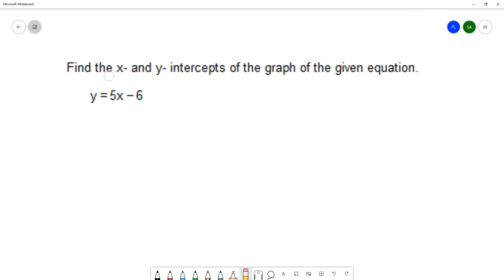For this question, we want to find the x and y intercepts of the graph of this given equation. Our equation is y equals 5x minus 6. Let's start by finding the y intercepts because they're a little bit easier.